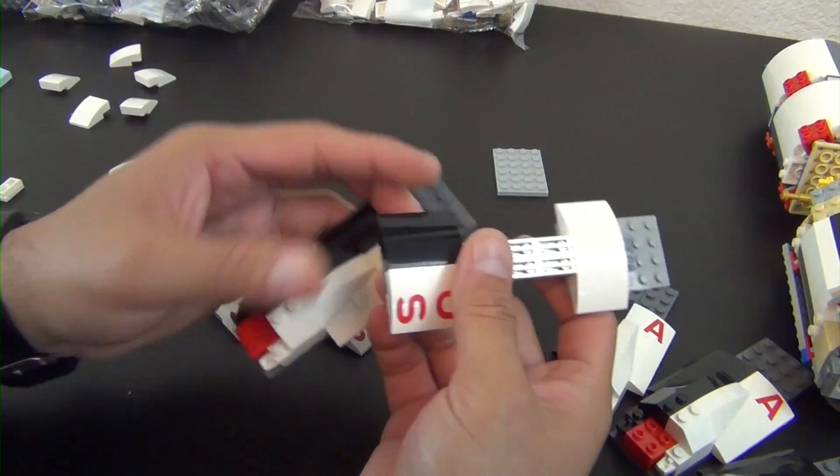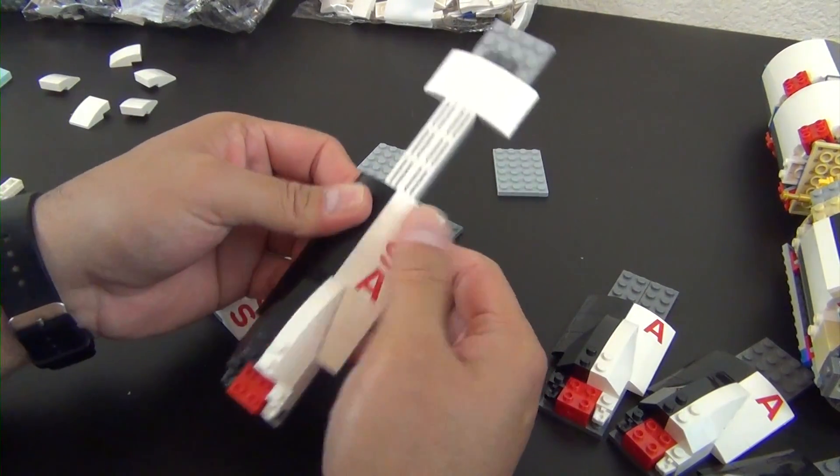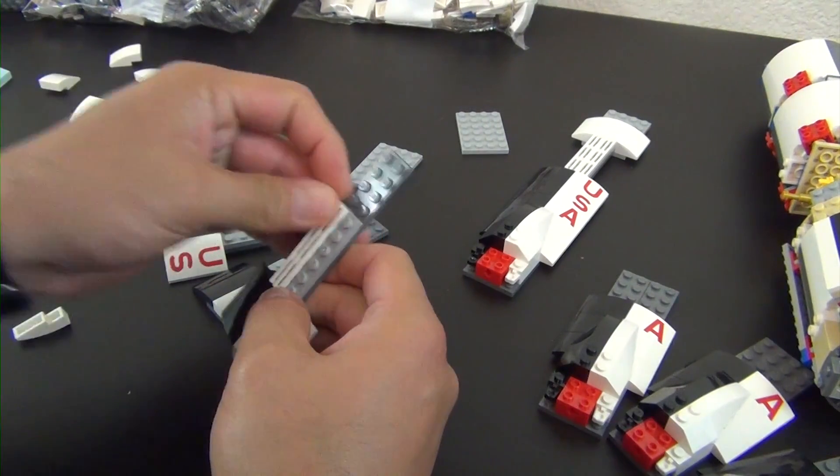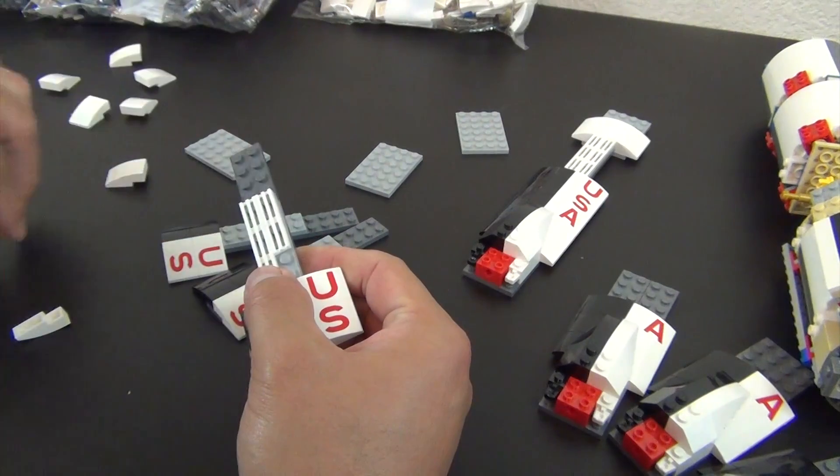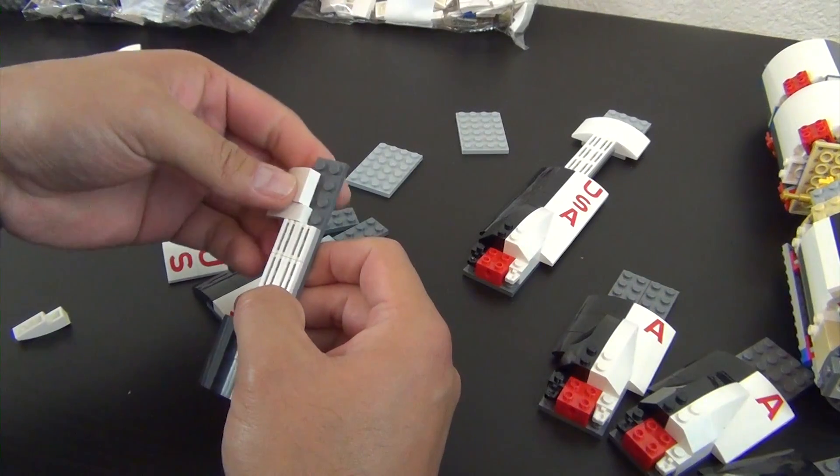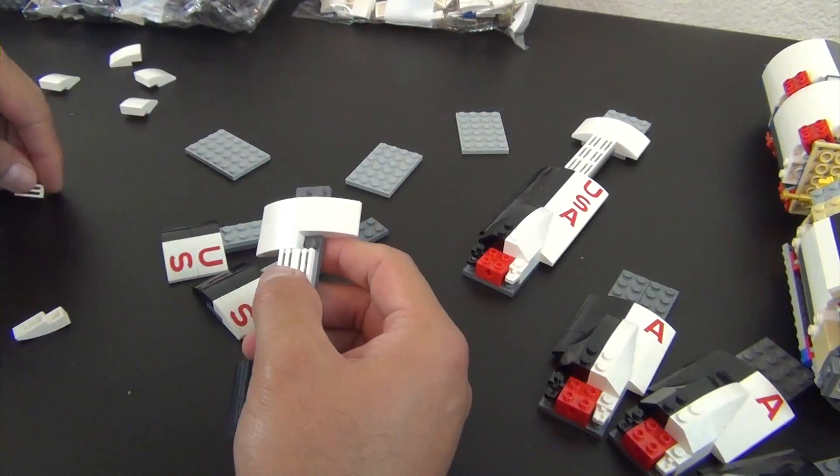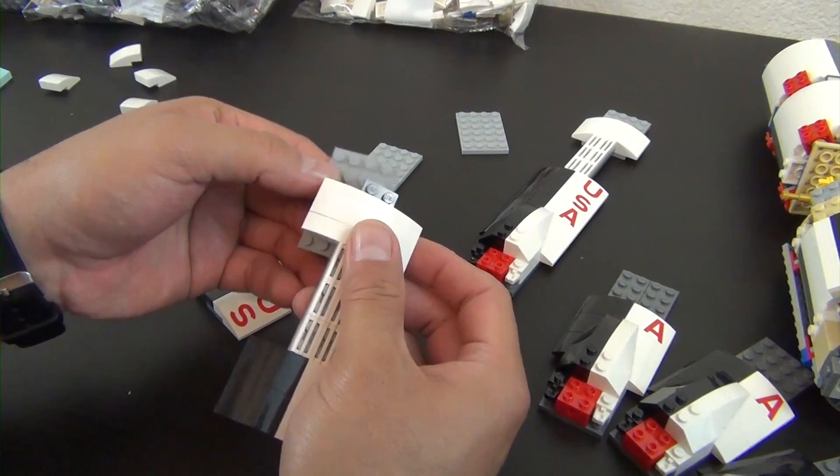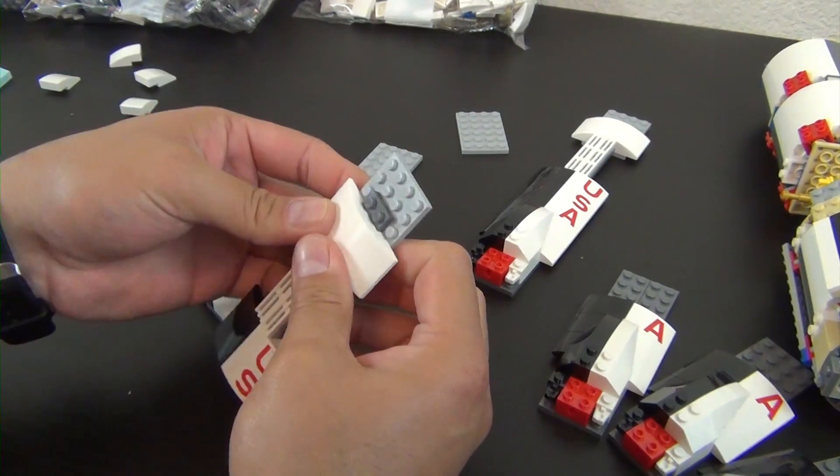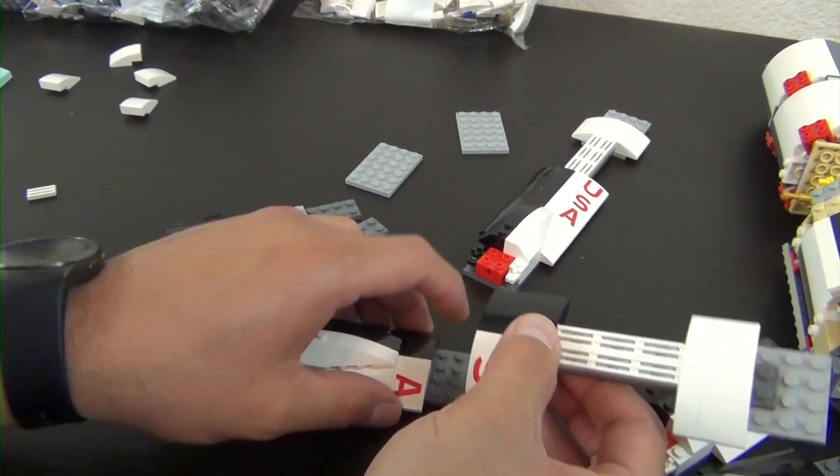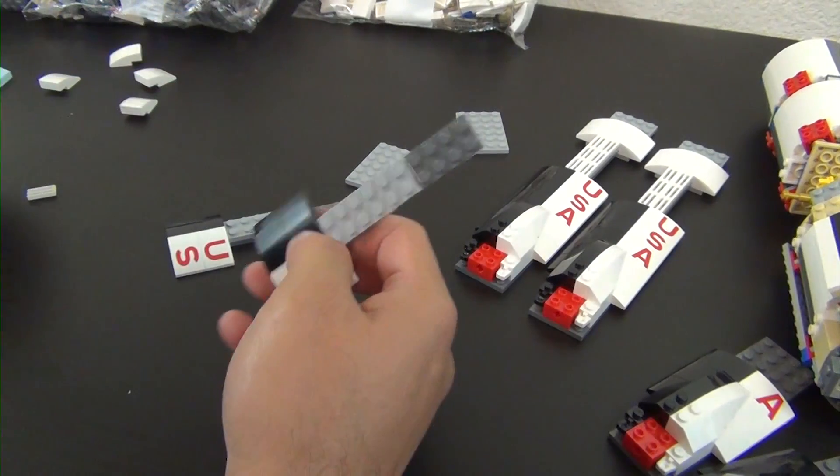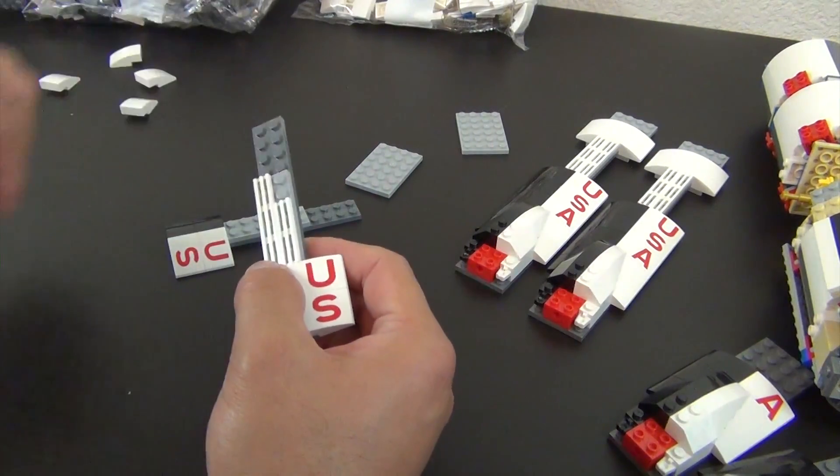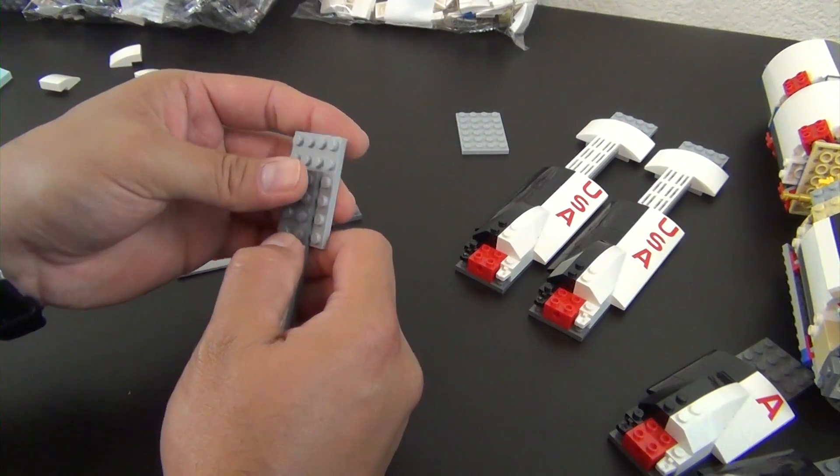That and that, that and that, and then this will attach right here. We have to repeat that three more times. This goes there, so it has two studs exposed, two rows of studs exposed. That's kind of how I'm looking at it to make sure I have it right. One, two, three, four, five, six, two rows exposed.